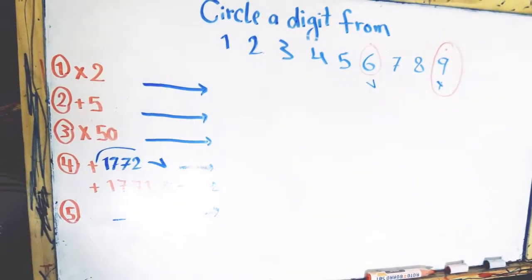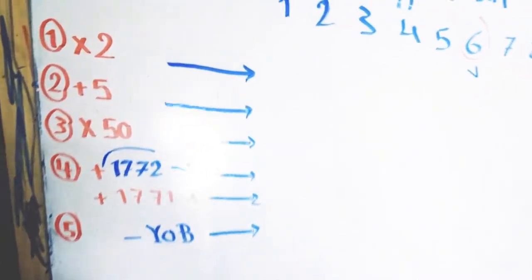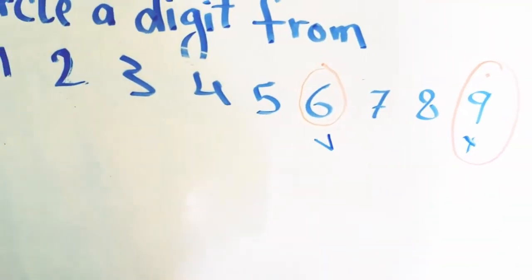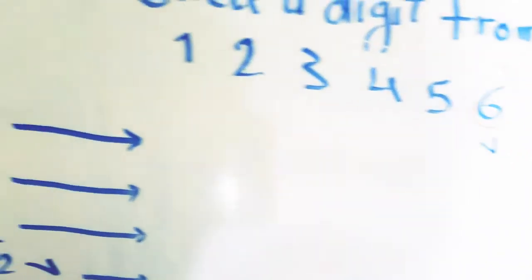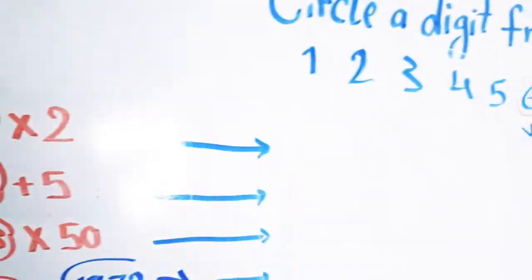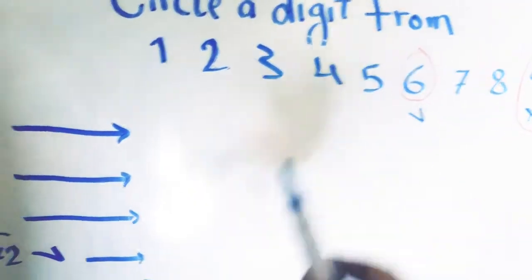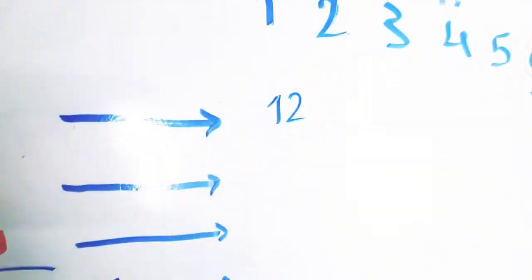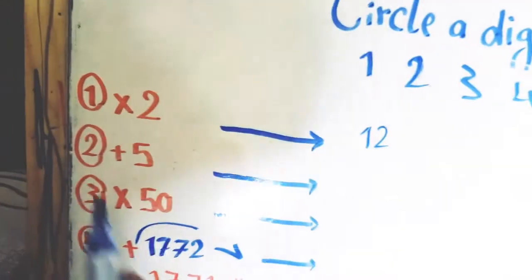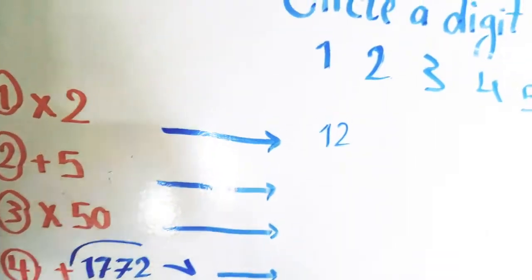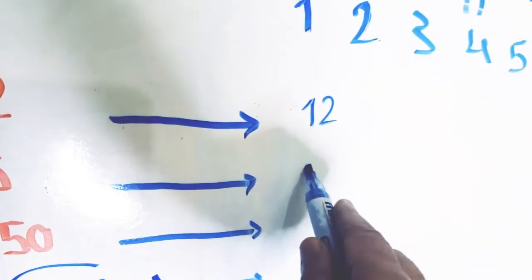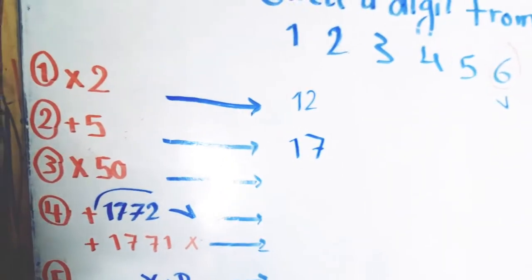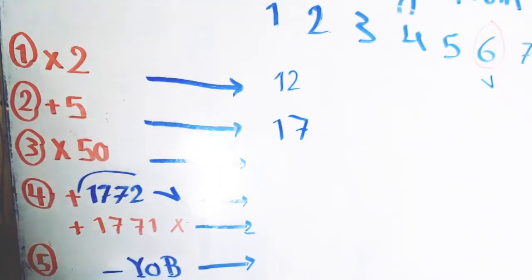The first step: we multiply the digit which you have picked by 2. When we multiply 6 by 2, we get 12. Add 5 to this result, so we get 17. Multiply this result by 50, so we get 850.